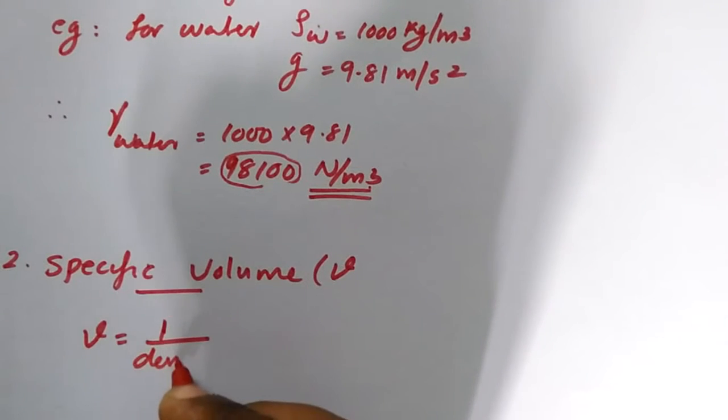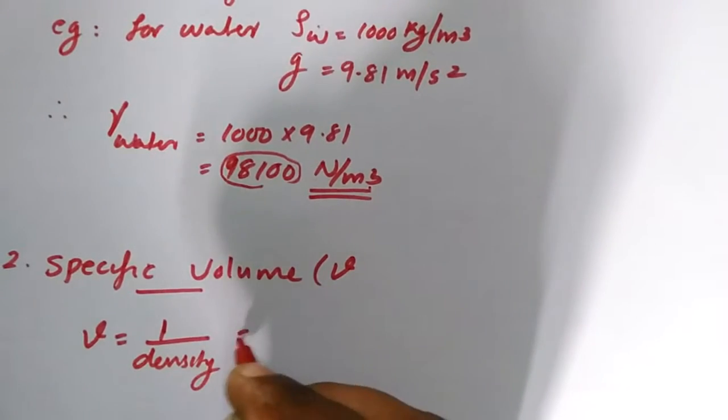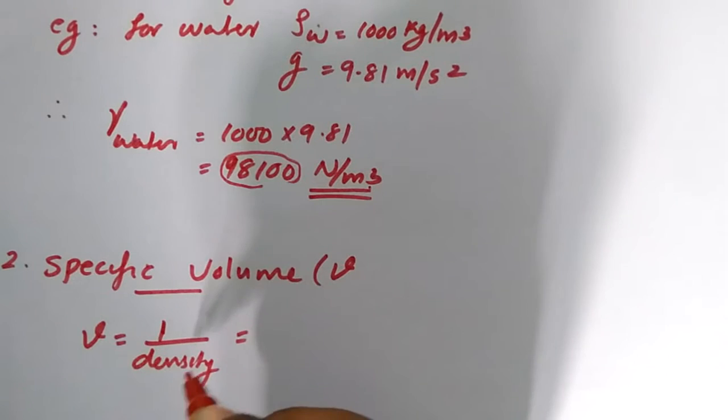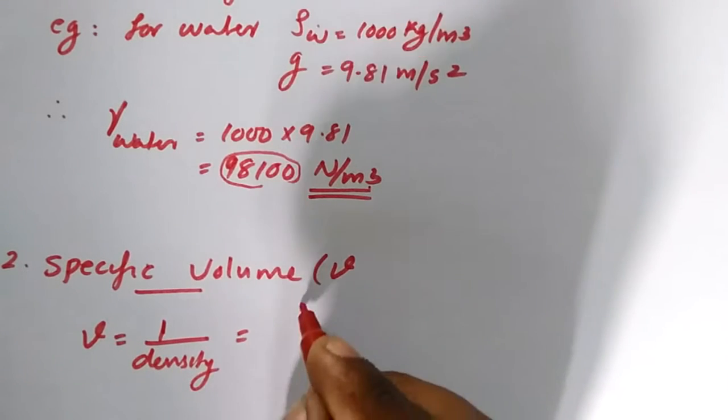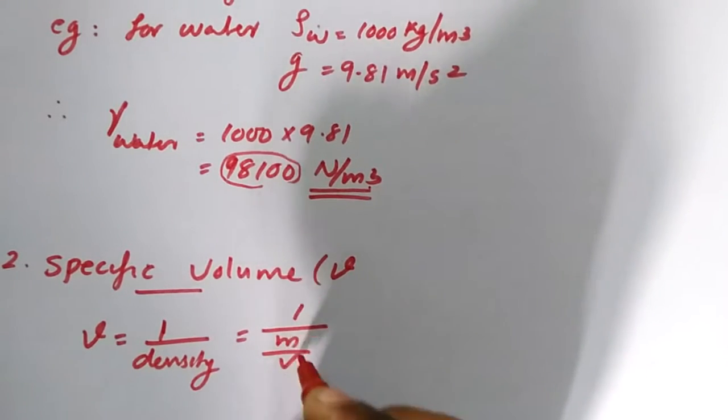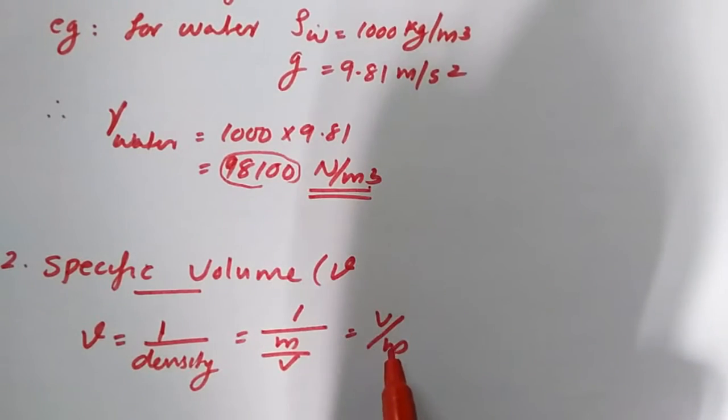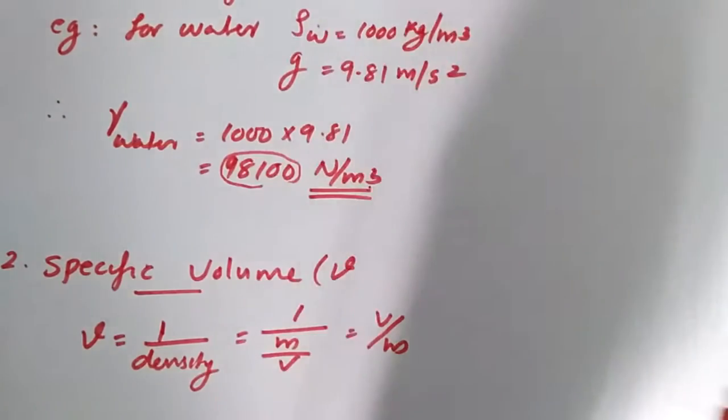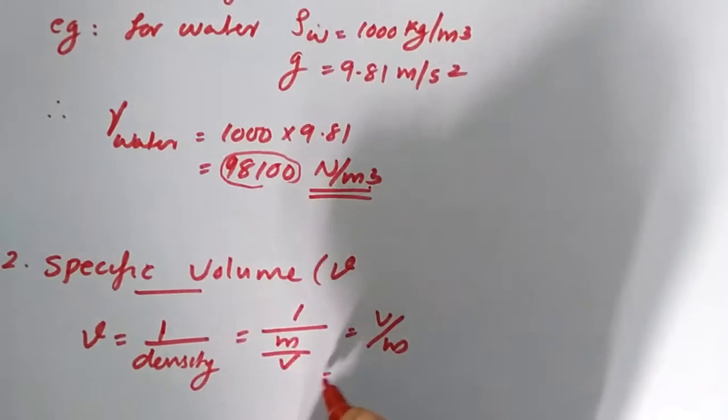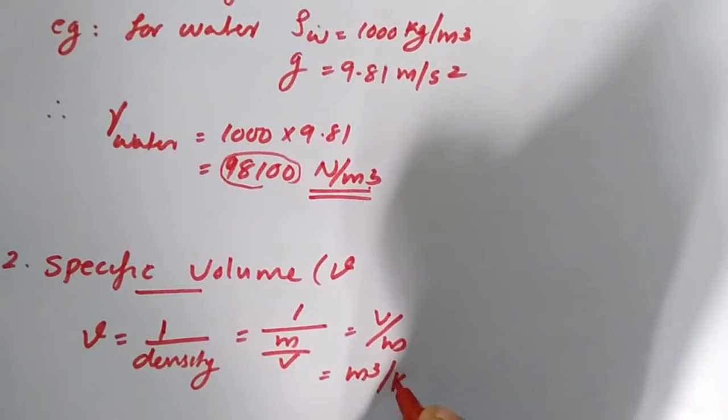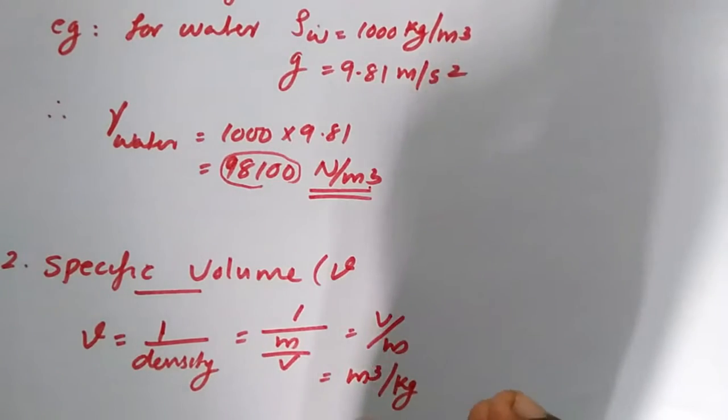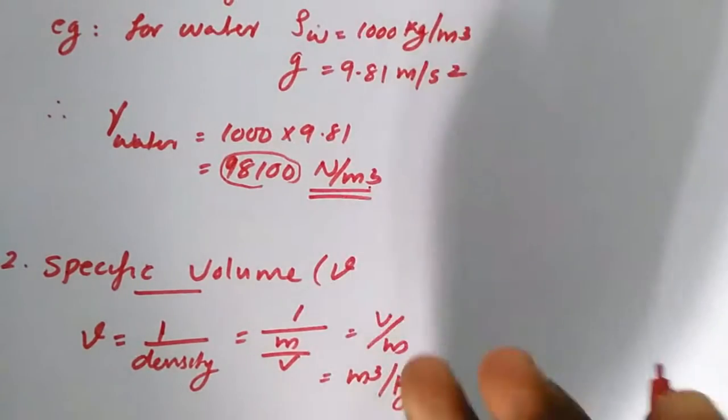That is equal to, we know that density is mass by volume, so this is volume per unit mass. The unit will become meter cube per kilogram. That is, one kilogram of the material, what will be the volume of the fluid.